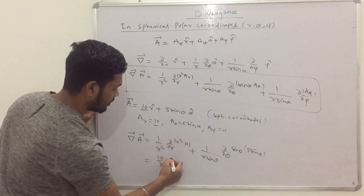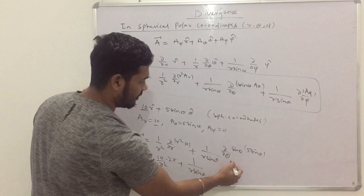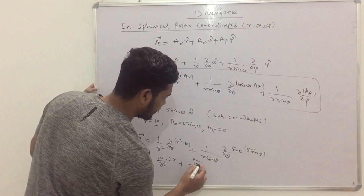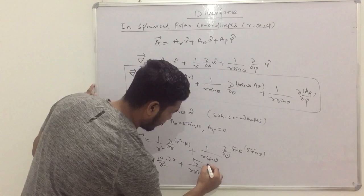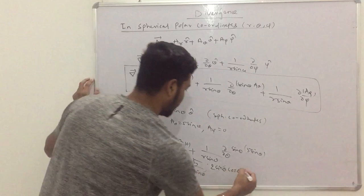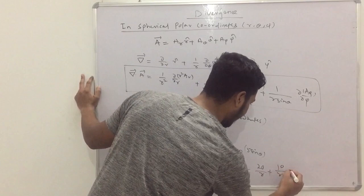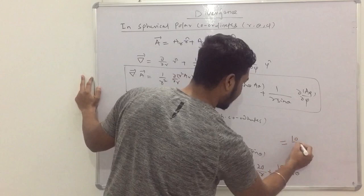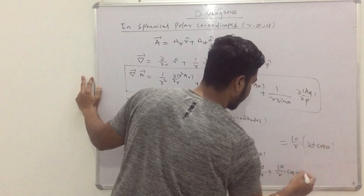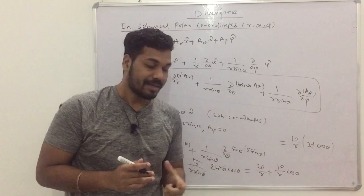Just put the values of A_r, A_θ, and A_φ into the formula and you will get the result. So ∇·A = (1/r²)(∂/∂r)(r² · 10r²) + (1/r sinθ)(∂/∂θ)(sinθ · 5 sinθ) + 0. Simplifying: 10 is constant, derivative of r⁴ gives 4r³ divided by r² gives 40r... wait — simplifying step by step gives 20/r · r = 20/r + (10 cosθ)/r. Taking 10/r common: the result is (10/r)(2 + cosθ).